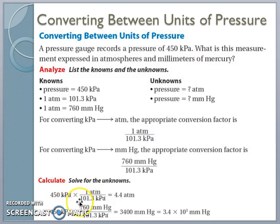Since we have this unit here, we have to have the exact unit on the bottom, and we use this conversion factor. We cross out the units that are the same, we do our math. We multiply 450 by 1 and divide by 101.3, and we're going to get 4.4 atmospheres.